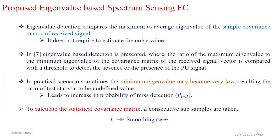The proposed eigenvalue-based spectrum sensing at the FC compares the maximum to average eigenvalue ratio of the sample covariance matrix of the received signal. This method does not require estimation of the noise variance. In the literature, eigenvalue-based detection was first presented using the ratio of maximum eigenvalue to minimum eigenvalue of the covariance matrix, compared against a predefined threshold. However, in practice, the minimum eigenvalue can become very small, generating an ill-conditioned matrix and increasing the probability of false detections. Therefore, the minimum eigenvalue is replaced with the average eigenvalue.